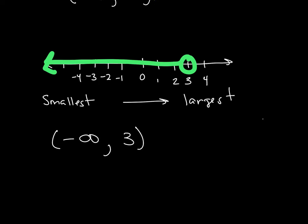How would I write that with inequality notation? Inequality means I have my x value. My x value in this case is 3, and I know that x — which represents the entire number line — is always less than 3.